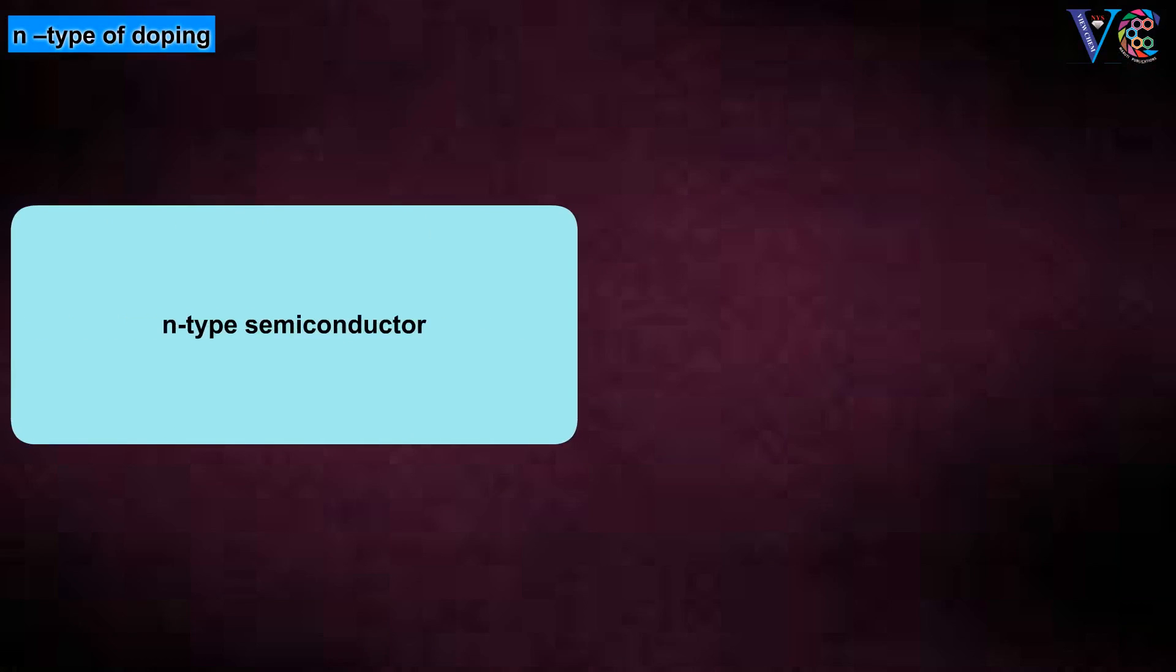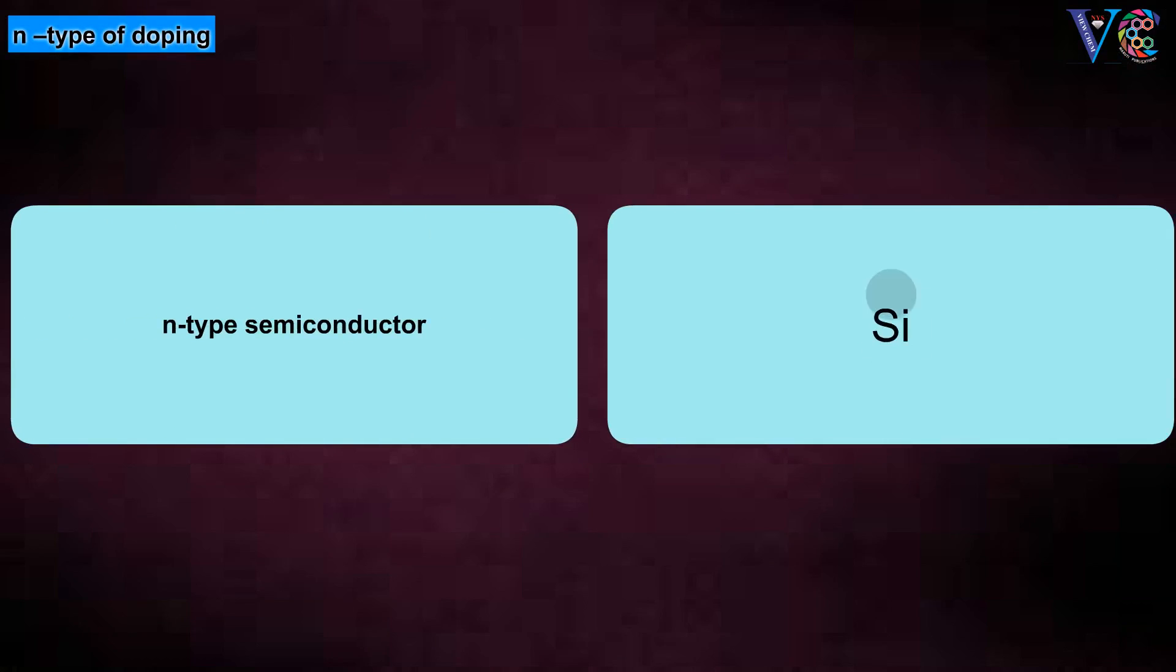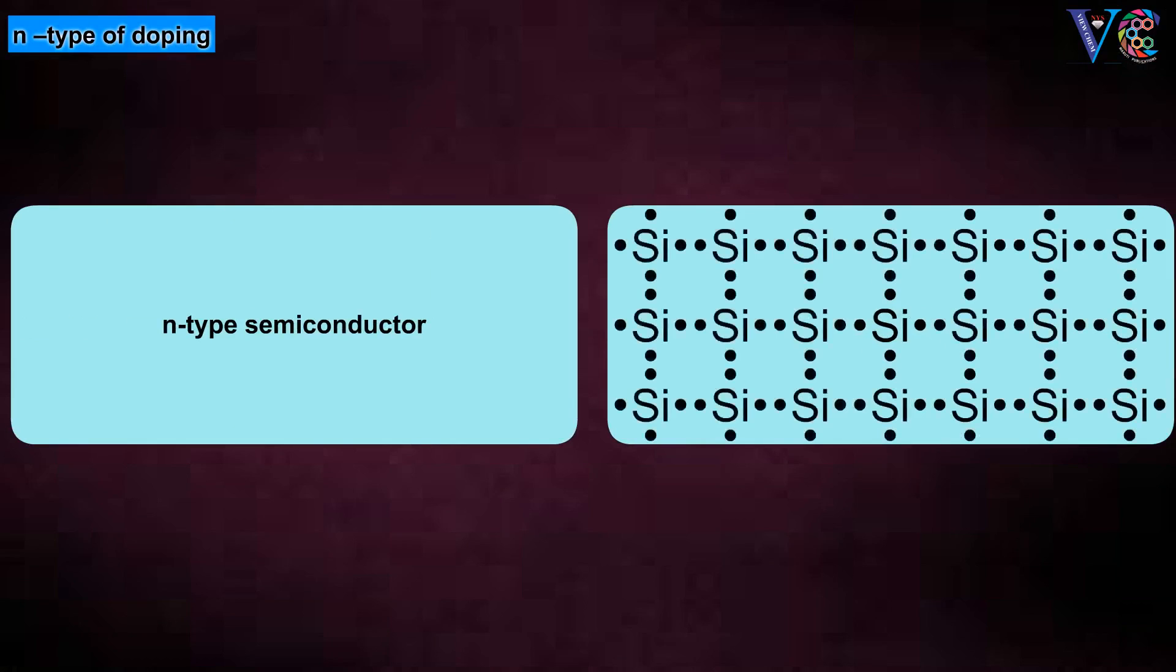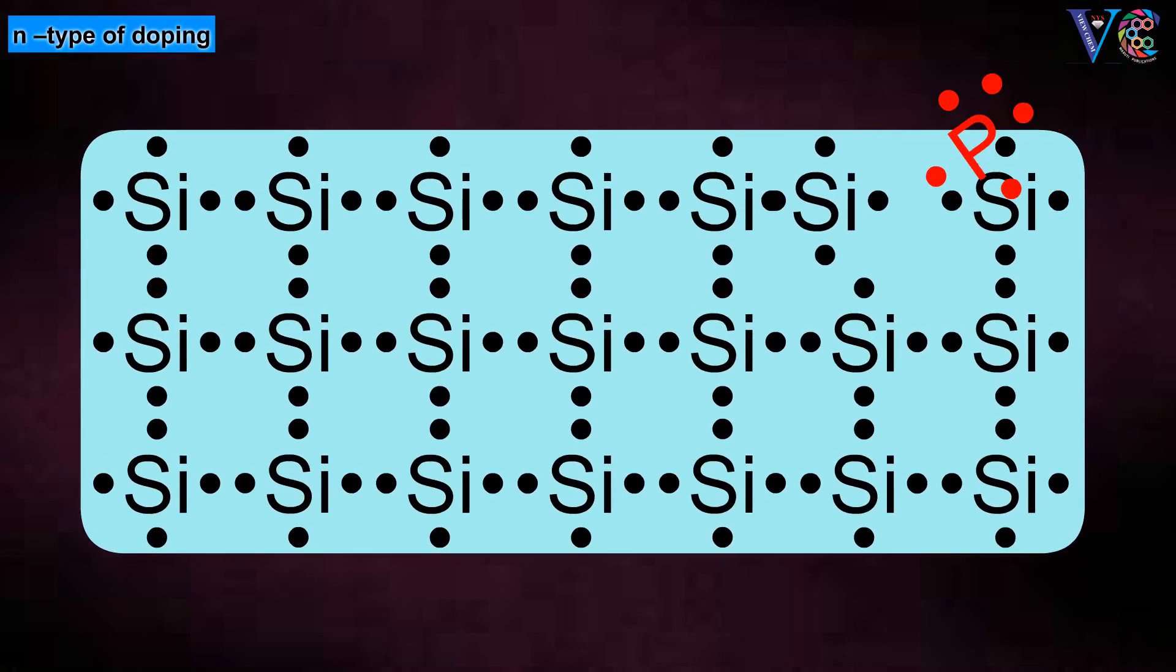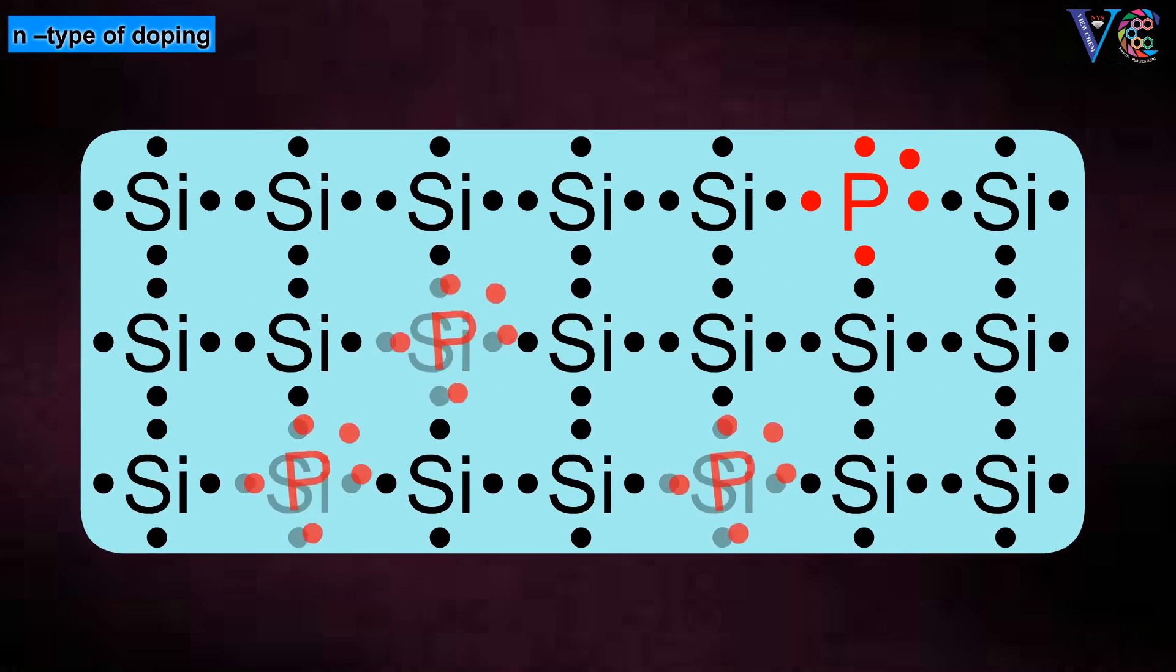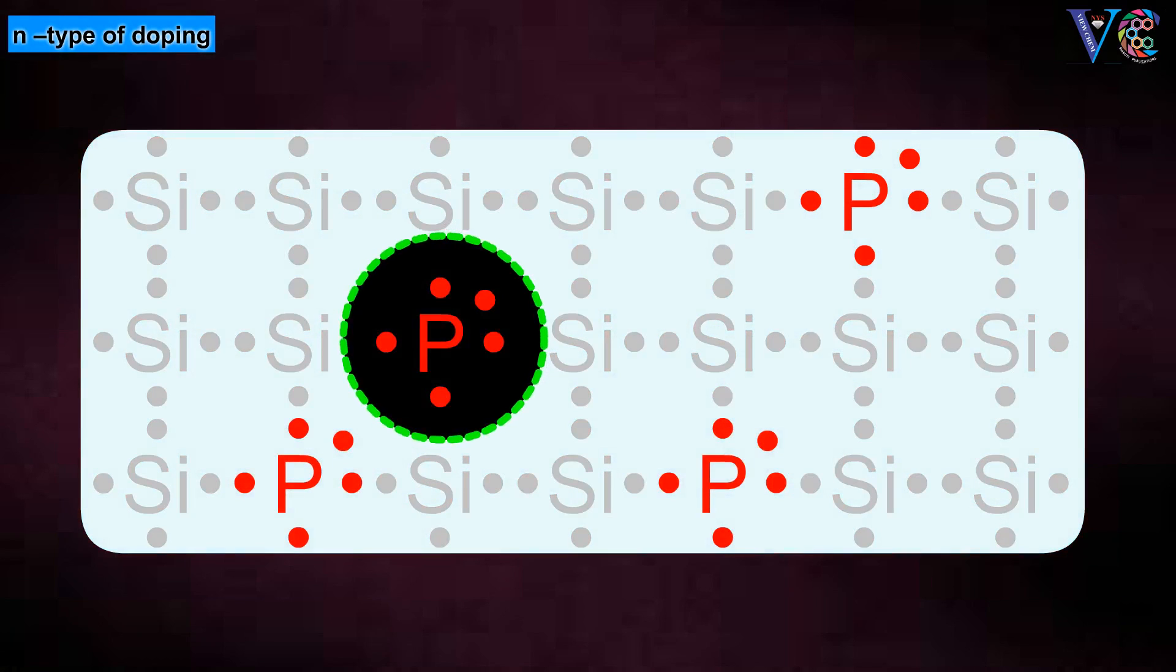The N-type of semiconductor is basically a silicon metal in which phosphorus atoms are doped. Phosphorus belongs to 5a group. It has 5 valence electrons. Four valence electrons of phosphorus are involved in the bonding with 4 valence electrons of silicon.